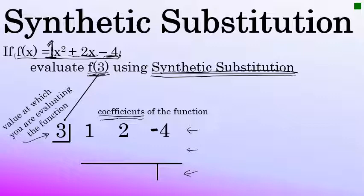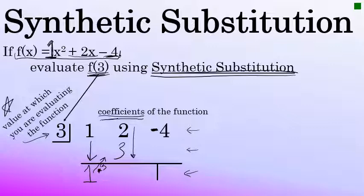The way that we go through the synthetic substitution process at this point is to bring down the first number — which in this case is a 1 — and write it in the bottom row. Then, as we go from this 1, we're going to go back up to the second row and multiply it by the number in the box — the value at which we're evaluating the function. 1 times 3 is 3. As we come down the columns, we're going to add 2 and 3 to get 5. Then we'll go back up to the second column, again multiplying by 3. 5 times 3 is 15. As we come down our final column, we add negative 4 plus 15, which is 11.